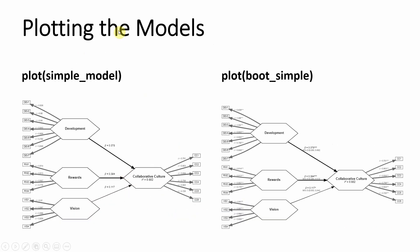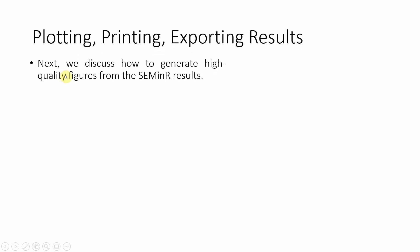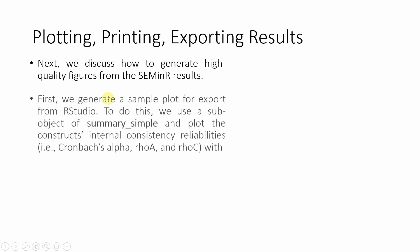Now that we have written the output to a CSV file, the next step is generating model plots — similar to what you used to get in SmartPLS. This is your simple model estimated using estimate_pls, and this is your bootstrapped model. They are similar but the bootstrapped model includes significance values and bias-corrected confidence intervals.